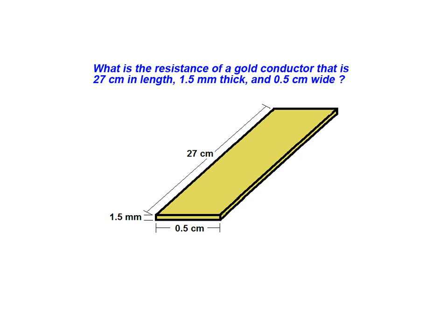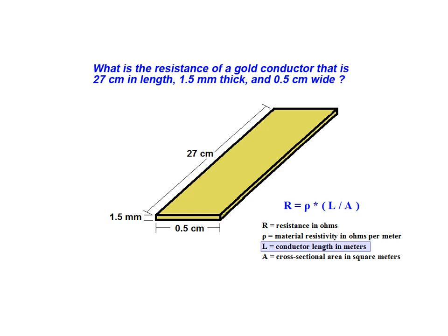For this calculation, we will assume that we are asked for resistance at room temperature or 20 degrees Celsius. Begin the solution by converting all dimensions into the units specified in the relationship used to calculate resistance. The previously provided relationship requires that the length of the conductor be expressed in meters. In addition, the cross-sectional area is to be expressed in square meters, so we also want to convert the width and thickness and express them in meters to simplify the area calculation. One meter is equal to 1,000 millimeters. One meter is also equal to 100 centimeters.